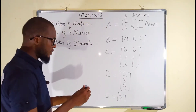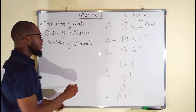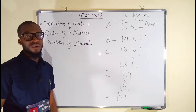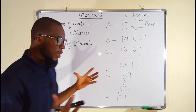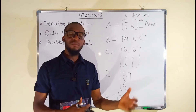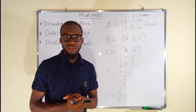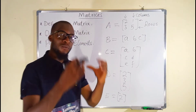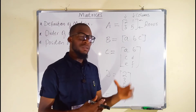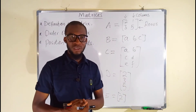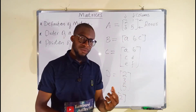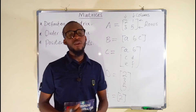Let us talk about the second point: the order of a matrix. The order of a matrix is just the dimension of that particular matrix according to the number of rows and columns. Always you have to start from the rows followed by the columns.